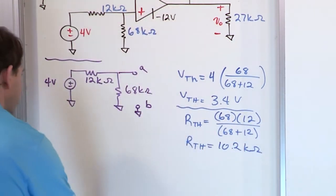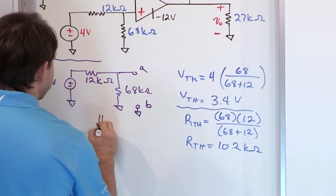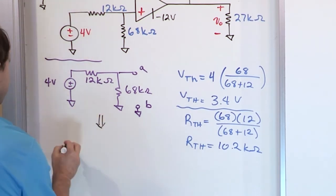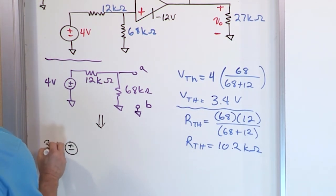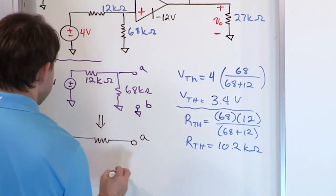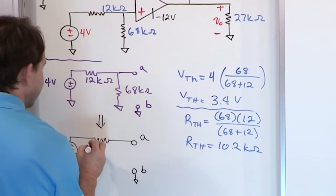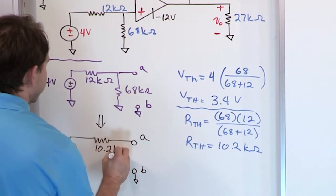So effectively what you've done is you transformed what's actually built in the circuit to a simpler equivalent circuit, which has a voltage, a Thevenin voltage of 3.4 volts, in series with a single resistor, and we'll call this terminal B that we're measuring it with respect to, and that resistance is 10.2 kilo ohms.